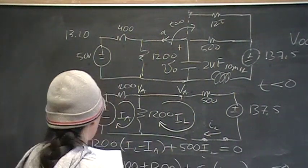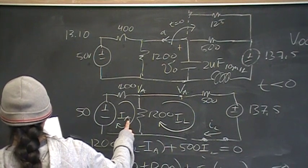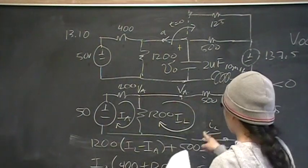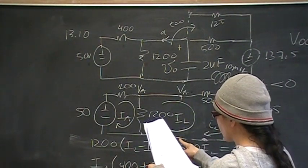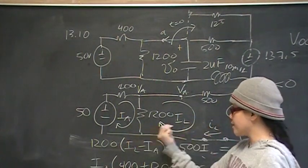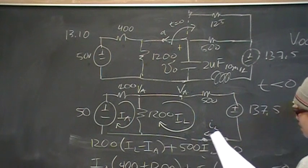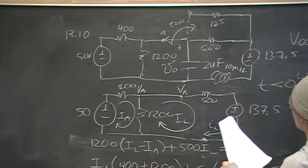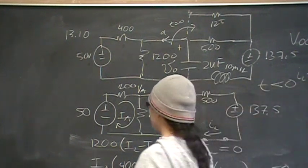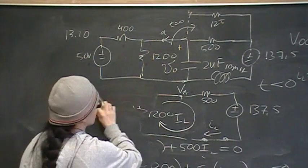So, when you solve that, you'll find IA is negative 0.0625 amps, and IL in this direction is negative 0.125 amps, which means the current is really flowing in this direction. This is the direction of positive current, so the direction that I have indicated there works out to be IL is equal to 0.125 amps. So, now we have the information that we need to draw the circuit in the S domain for post-switching.